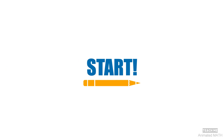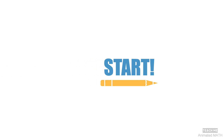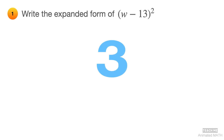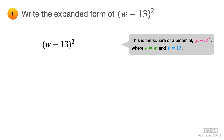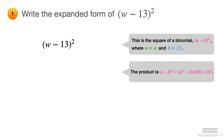All right, let's start squaring binomials. This binomial follows the perfect square subtract times subtract pattern, which is a minus b squared. The only difference is that a is equal to w and b is equal to 13. Its product is a squared minus 2ab plus b squared. So substitute w for all a's and substitute 13 for all b's.